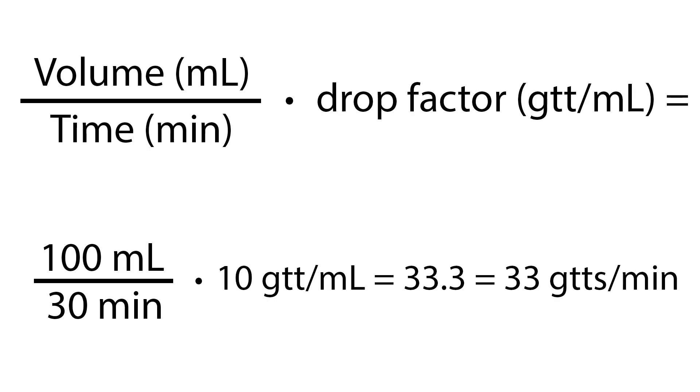Let's look at an example of an IV piggyback medication. Ancef 1 gram in 100 mLs normal saline to be infused over 30 minutes. You have a macro drip tubing with a drop factor of 10 drops per mL. Calculate how many drops per minute to set as the IV flow rate. Use the formula with 100 mL divided by 30 minutes multiplied by 10 drops per minute, which equals 33.3, rounded to 33 drops per minute.